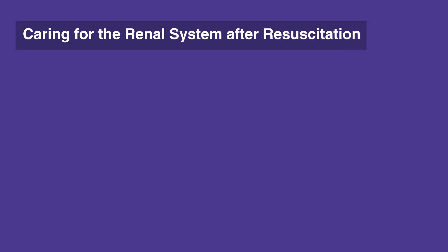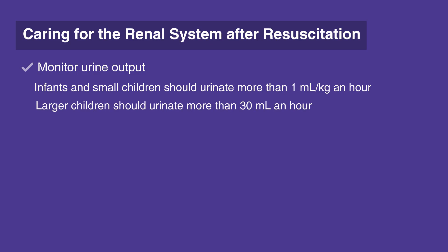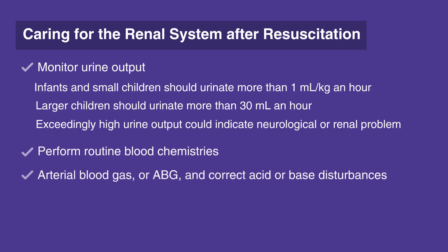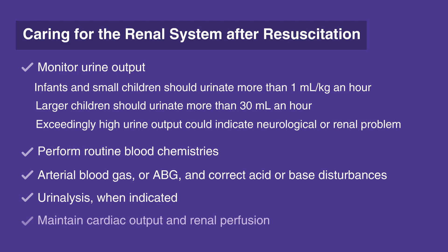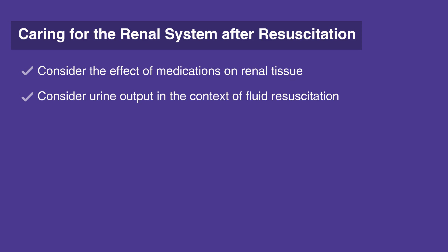When caring for the renal system after resuscitation, follow this checklist. Monitor urine output. Infants and small children should urinate more than 1 mL per kg per hour. Larger children should urinate more than 30 mL per hour. Exceedingly high urine output could indicate neurological or renal problems, or diabetes insipidus. Perform routine blood chemistries. Arterial blood gas, or ABG, and correct acid or base disturbances. Urinalysis when indicated. Maintain cardiac output and renal perfusion. Consider the effect of medications on renal tissue, or nephrotoxicity. Consider urine output in the context of fluid resuscitation.